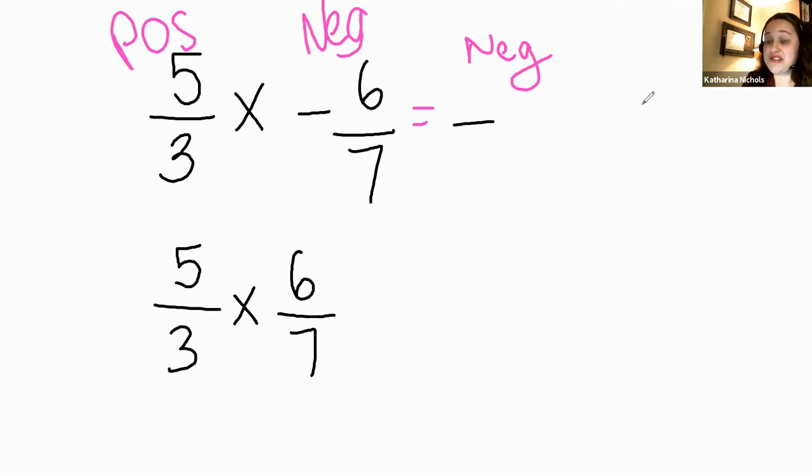Let's look for common factors I can cancel out. Six and three have a common factor. Three is equal to three times one and six is equal to three times two. Therefore, I can cancel out these factors of three and my problem turns into five over one times two over seven.